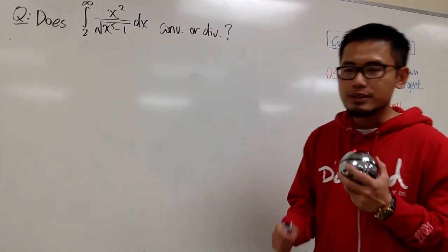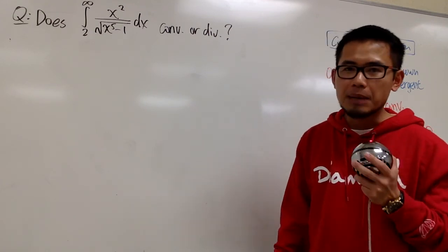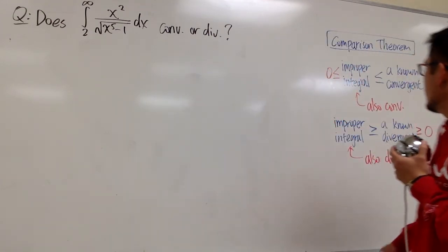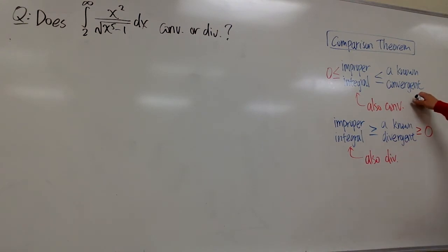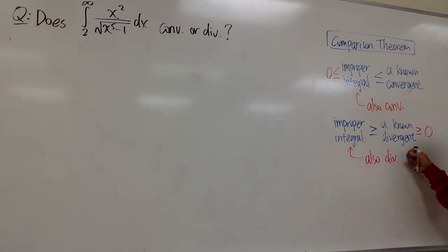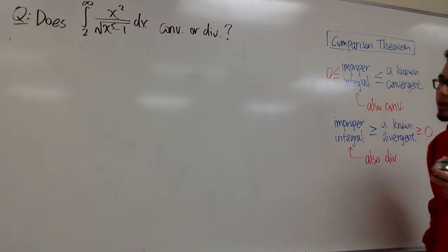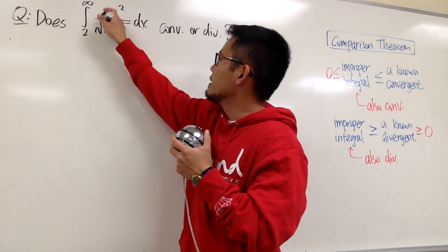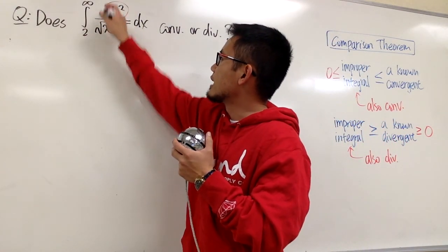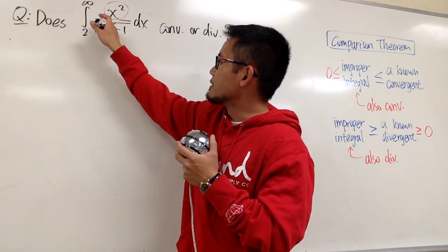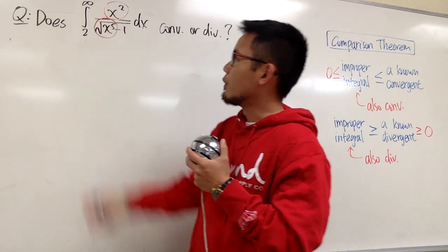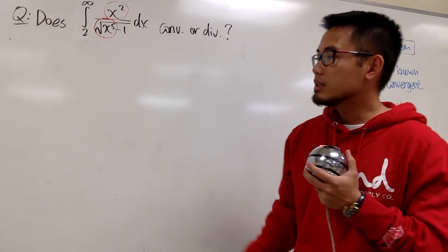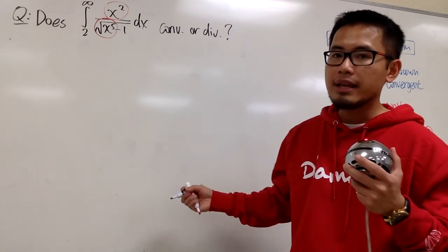In order to use the comparison theorem, we have to first come up with something we know much better — either something that converges or something that diverges. The idea is to pick the highest power of x on the top and on the bottom we have the square root of x to the fifth power. We'll work with the powers and see what we can get from there.